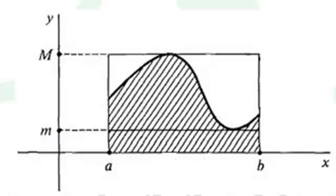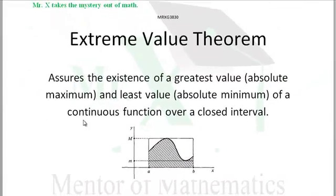That's what the Extreme Value Theorem tells us. We'll have a maximum and a minimum over any continuous function on a closed interval.